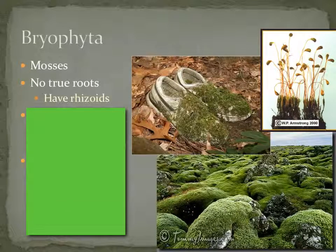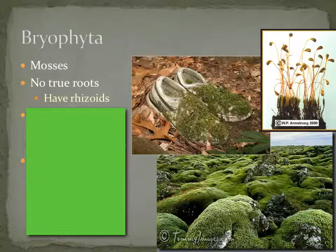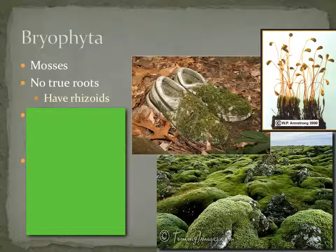The first characteristic is they don't have true roots — not the true roots we just talked about. They have something called rhizoids, which are really just more for anchoring. They're not doing as much in the way of absorbing nutrients as true roots would be doing.